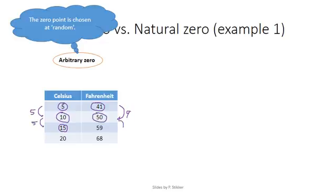There's a difference of 9. So that becomes 59. So the interval between two values, no matter if you do it in Celsius or Fahrenheit, is the same. 5 degrees each time in Celsius converts to a difference of 9 in Fahrenheit.